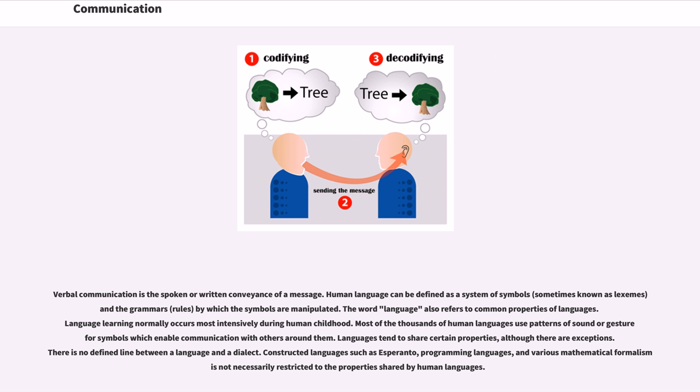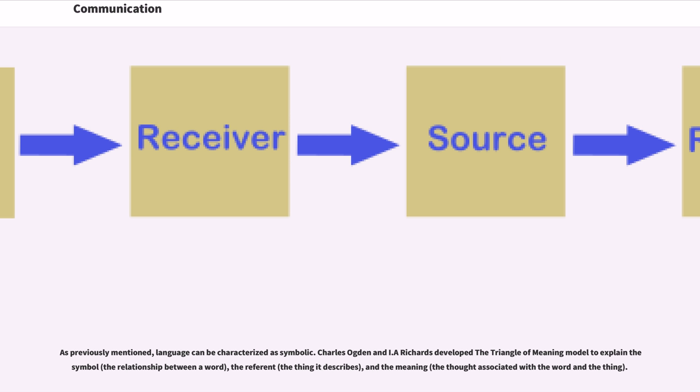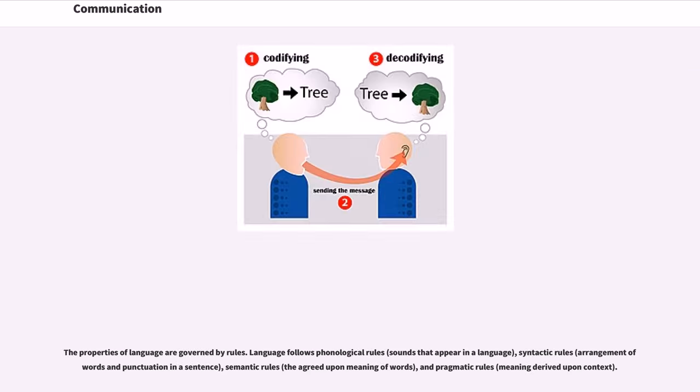As previously mentioned, language can be characterized as symbolic. Charles Ogden and I. A. Richards developed the Triangle of Meaning model to explain the symbol, the relationship between a word, the referent (the thing it describes), and the meaning (the thought associated with the word and the thing). The properties of language are governed by rules.